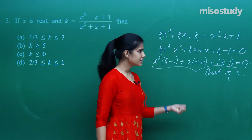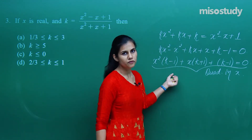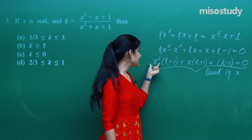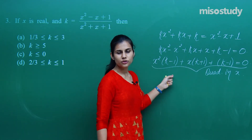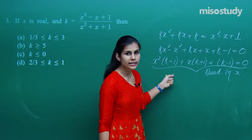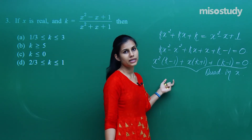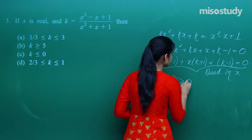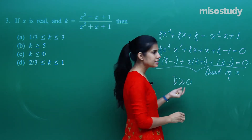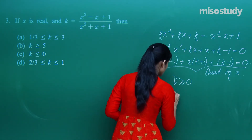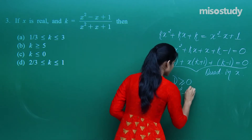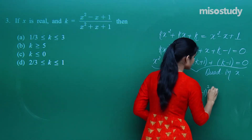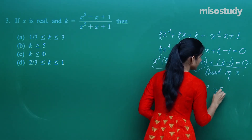Since x is given to be real, the discriminant of this quadratic in x must be non-negative — it cannot be negative, otherwise we get imaginary roots. So b² - 4ac ≥ 0, which gives (k+1)² - 4(k-1)(k-1) ≥ 0.